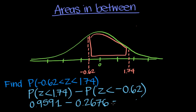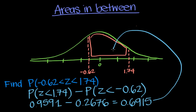And if we do the math and subtract these two from each other, we get 0.6915, which would be the probability of this region right here.